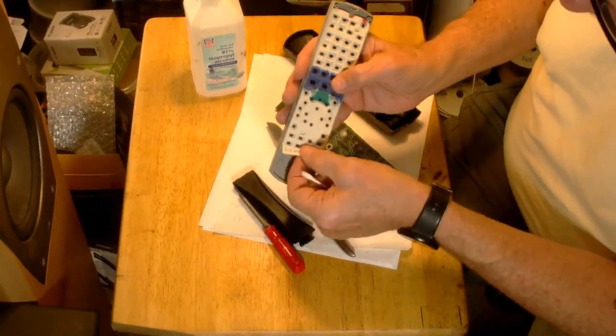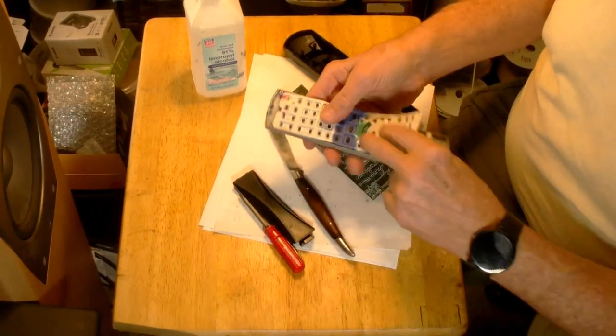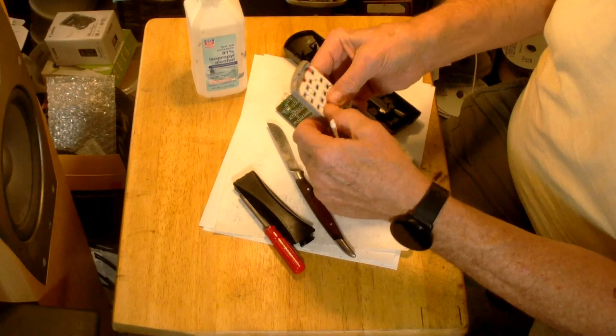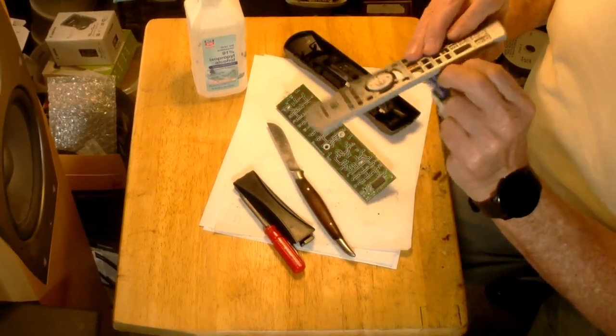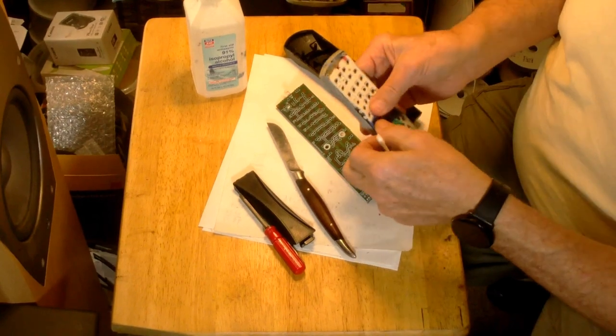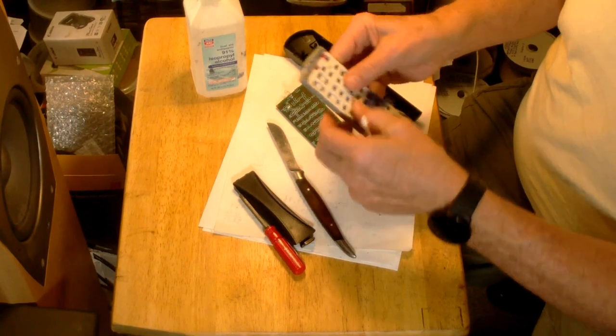This is a rubber pad here. You can just peel that up. I already cleaned this, so I'm going to put it back. So you take the rubber pad off. Clean all the buttons.